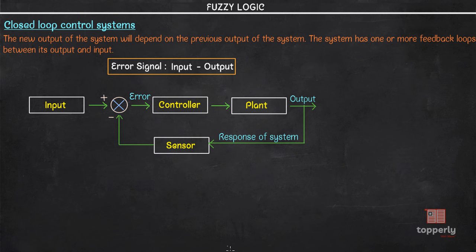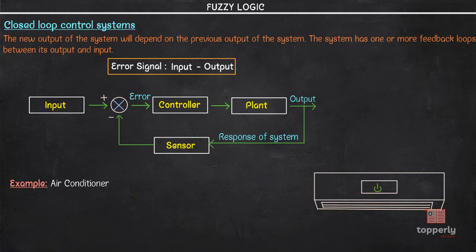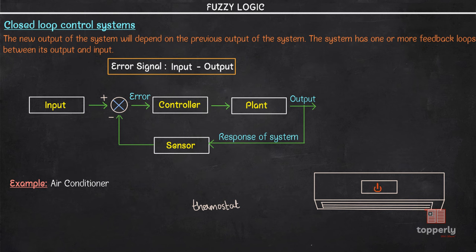An example of a closed loop system is an air conditioner. The AC can regulate temperature — either increase or decrease it — by comparing it with the surrounding temperature. This comparison is done with the help of a thermostat. When the AC generates the error signal, which is the difference between the surrounding and room temperature, the thermostat will either turn on or off the compressor. An air conditioner is thus an example of a feedback control system.